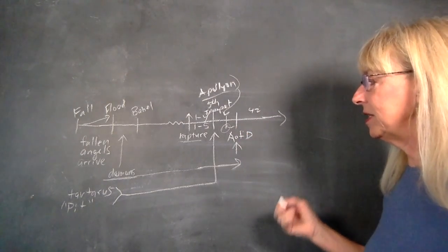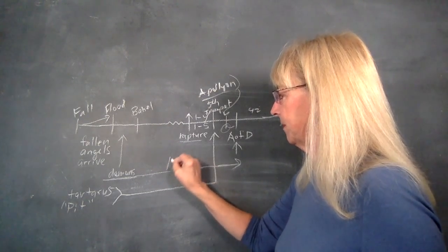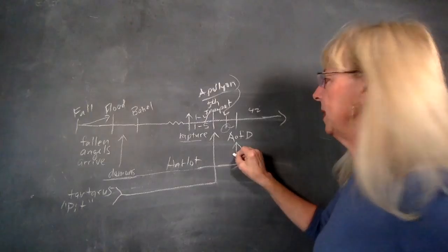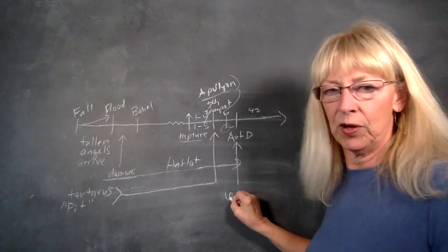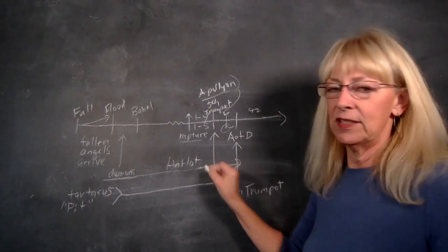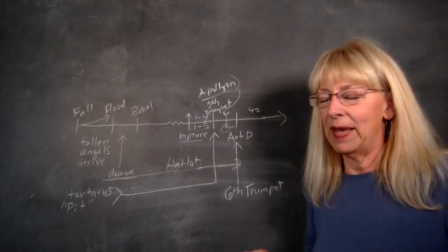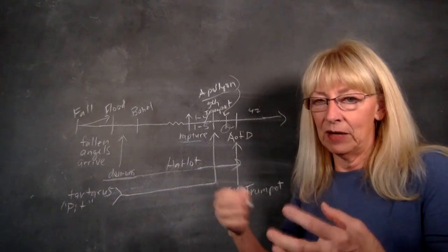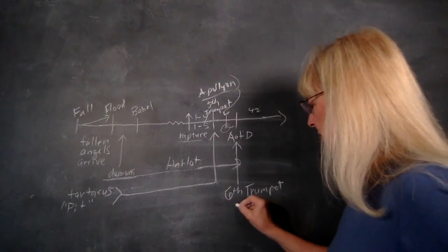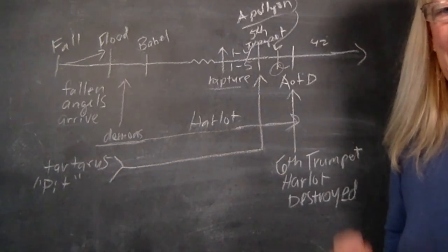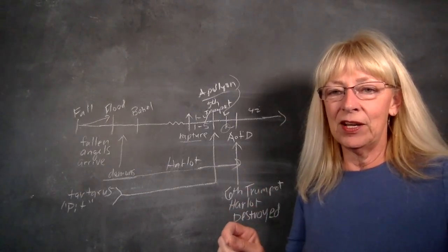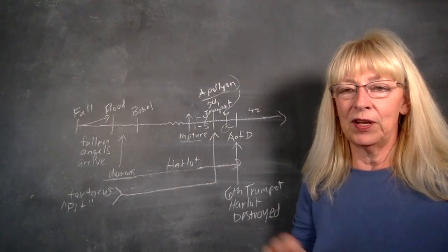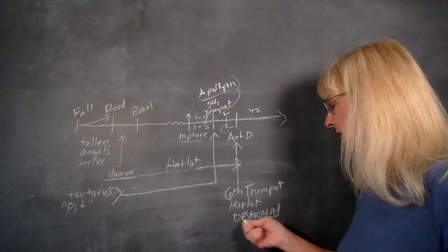The demons are influencing the Harlot, and Apollyon is going to be indwelling the Antichrist. It's right here on the same day as the Abomination of Desolation that we have the sixth trumpet, and that is when the Harlot is destroyed—a third of the earth that makes up the controlling globalists and all their minions and the cities that they are centered in. It's more than one city; that's all going to be destroyed. God has already put it in His appointment book—there's an hour, a day, a month, and a year when He's going to do this. This is non-negotiable. As far as Satan is concerned, ready or not, here I come. The Harlot is going to be destroyed at this time.